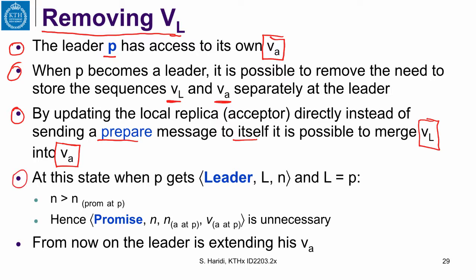Why is this correct? At this state, when P gets the leader event, so it means that L is the leader, we know that N is greater than the promise at this process. Hence, we are going to get a promise anyway. But these values are already available at the leader, so the message promise is unnecessary. So from now on, the leader is extending its own accepted value.